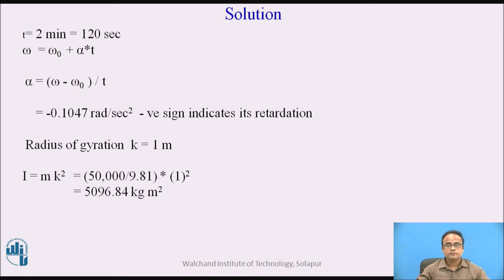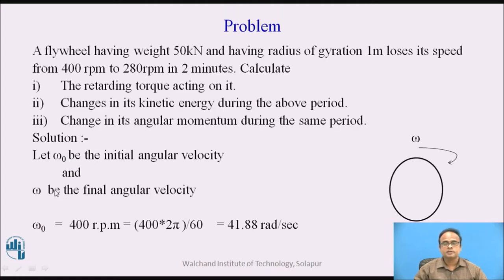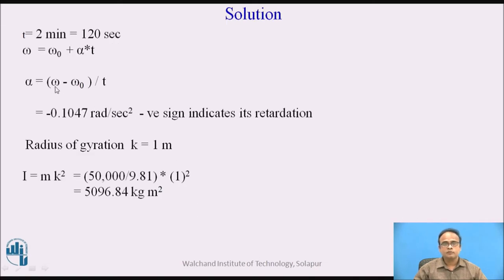Using the expression for rotational motion, omega equals omega 0 plus alpha times t, we can find angular acceleration as alpha equals omega minus omega 0 divided by t, that is, final angular velocity minus initial angular velocity divided by time. For omega (final), using 2 pi n with n equals 280 RPM. After substituting omega, omega 0, and t, we get angular acceleration as minus 0.1047 radian per second squared.